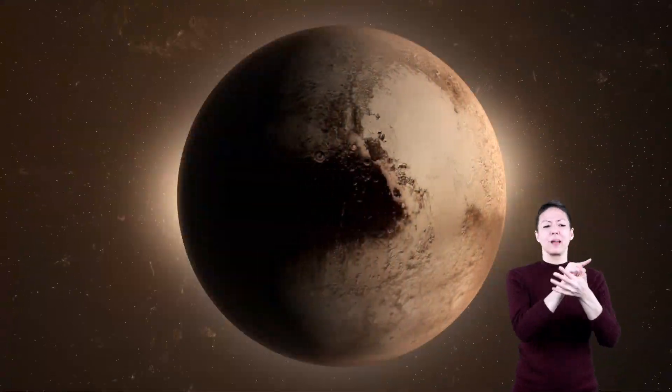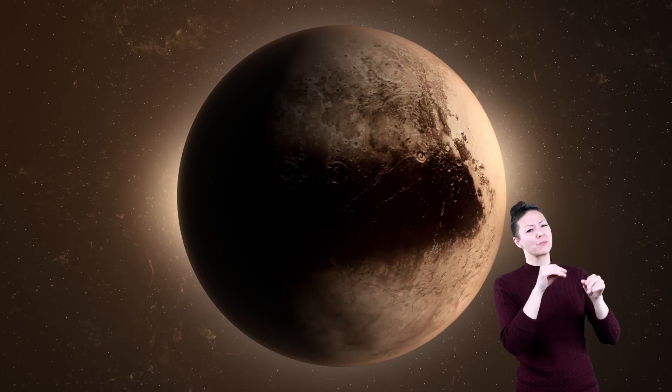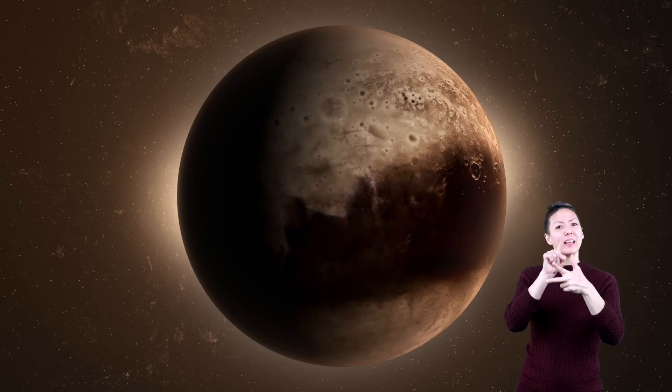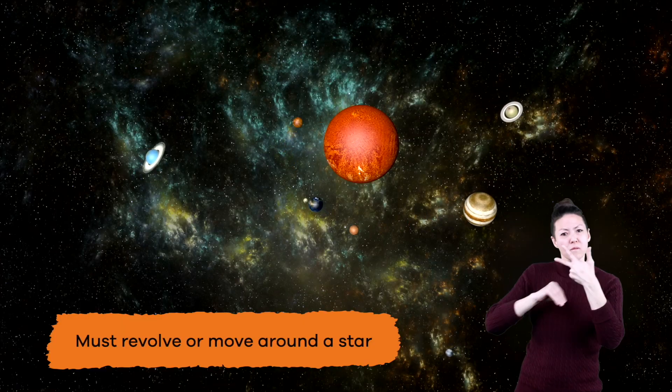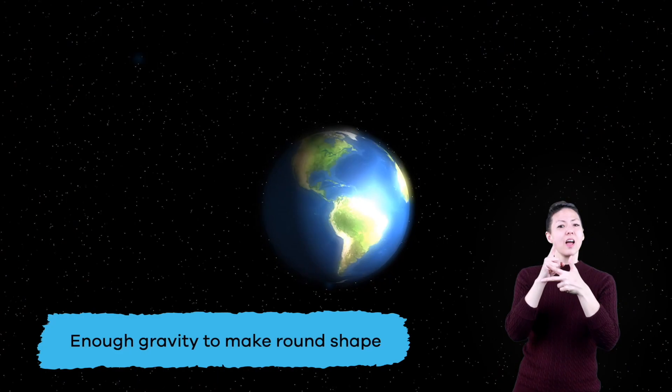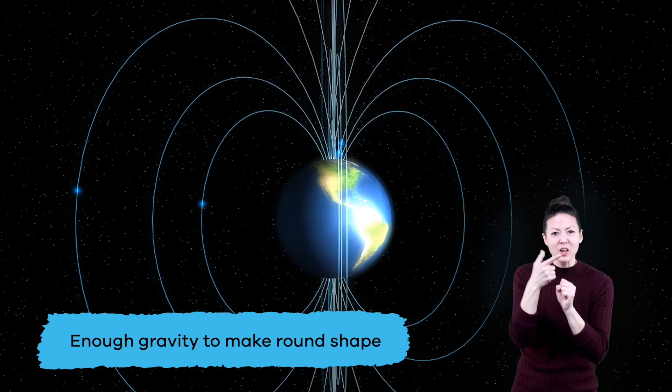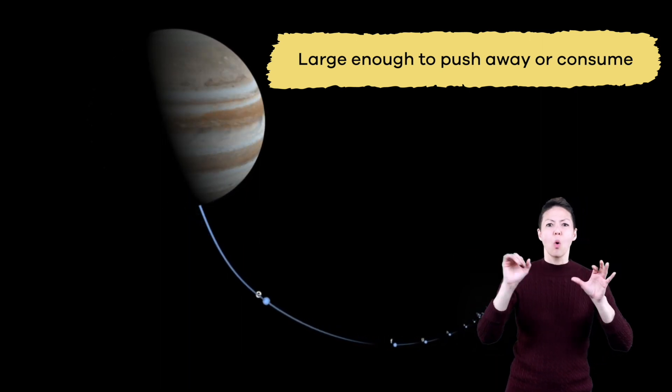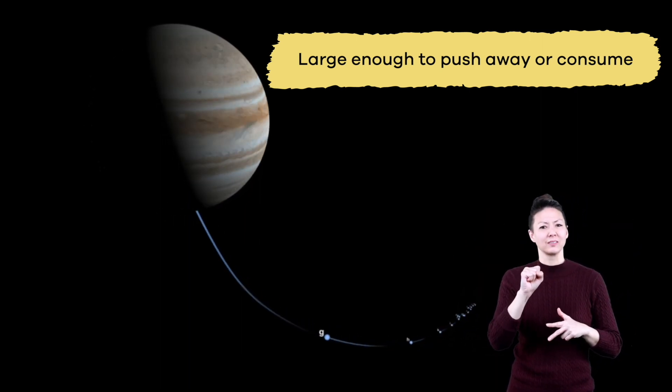Pluto didn't do something wrong. It just didn't meet all the criteria to be called a planet anymore. Remember the three things planets require to be called planets? They must revolve around a star. They have to have enough gravity to be round. And they must be big enough to push away or consume other objects in their path. Pluto got the first two, but it simply isn't big enough to push other big objects away from itself.